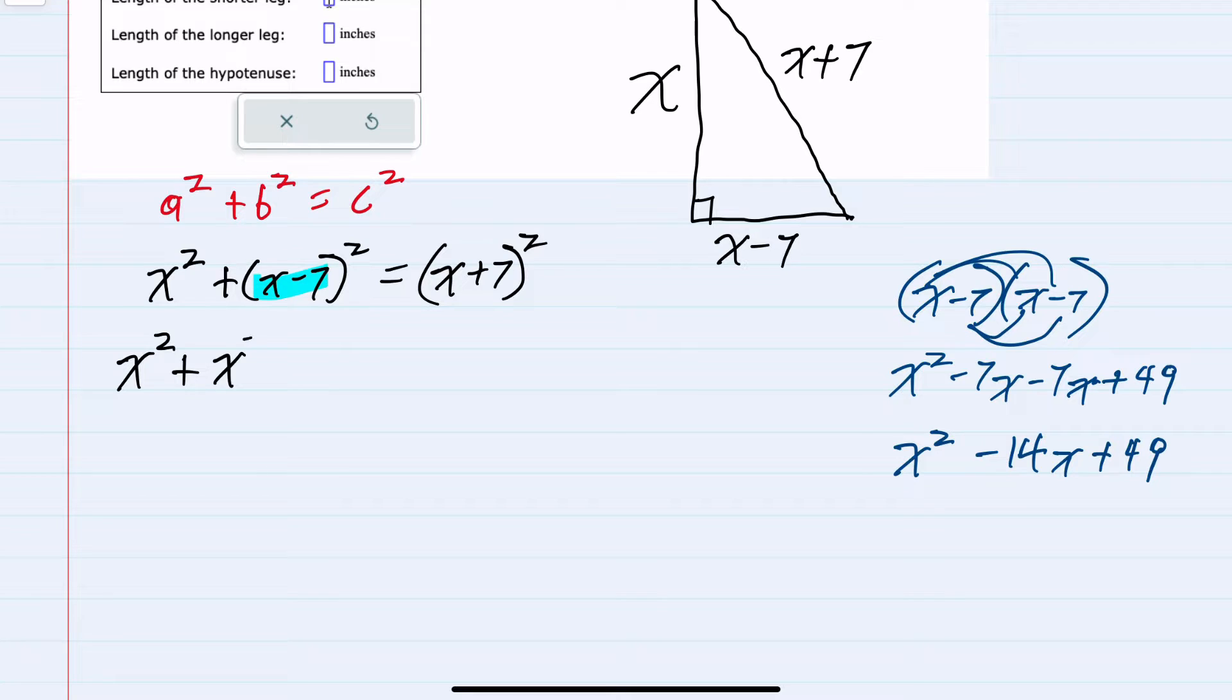I'll do that replacement x squared minus 14x plus 49 equals on the right hand side I have x plus 7 squared. So this time x plus 7 times x plus 7.